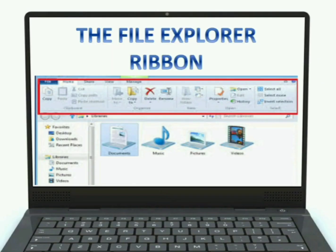Now we will discuss in detail about the file explorer ribbon. In Windows 10, the file explorer features a new ribbon toolbar similar to the one in recent versions of Microsoft Office. This ribbon contains buttons and commands for common tasks such as copying, moving, sharing, etc. The picture on your screen marked by the red rectangular border is the file explorer ribbon.